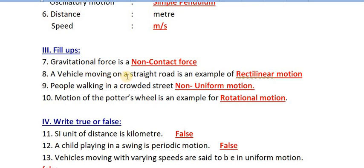Eighth one, a vehicle moving on a straight road is an example of rectilinear motion. One vehicle straight up on the road, that is what we say - rectilinear motion, linear motion.